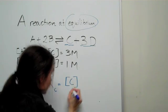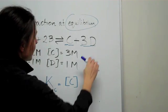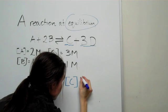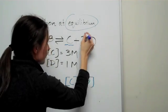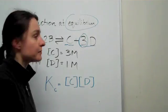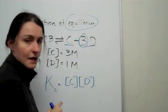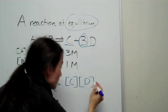You take the concentration of C because it's a product and products always at the top. Then you take the concentration of D and because there's a number three in front of this D value, you raise that to the power of three.